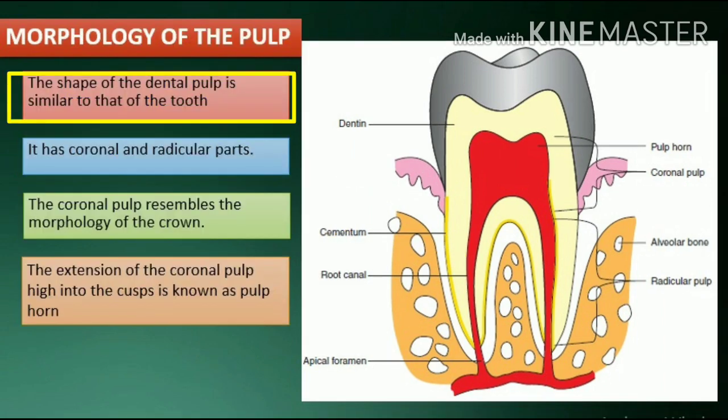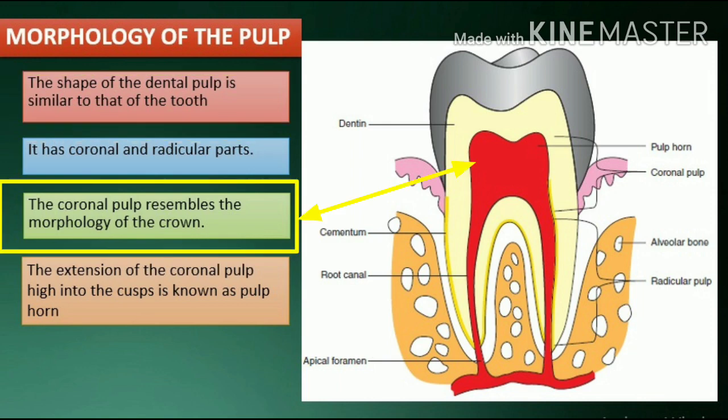Morphology of the pulp. The shape of the dental pulp is similar to that of the tooth; it has coronal and radicular parts. The coronal pulp resembles the morphology of the crown.